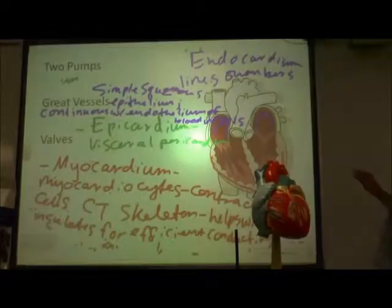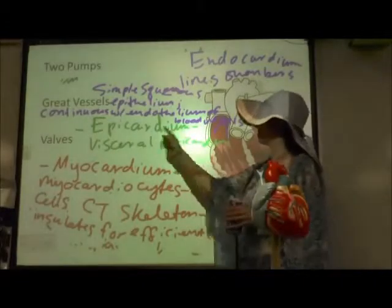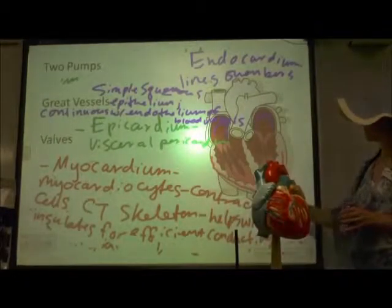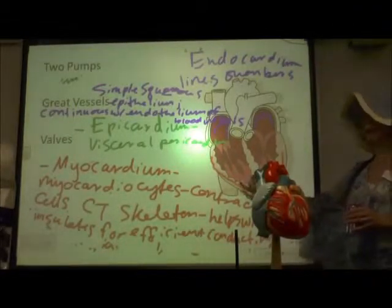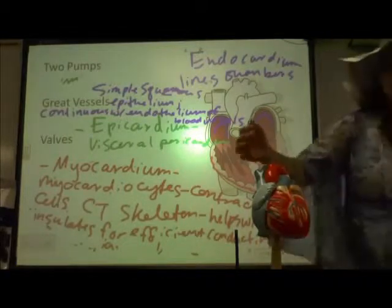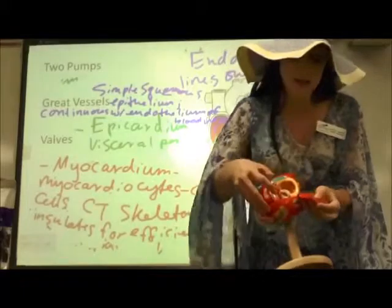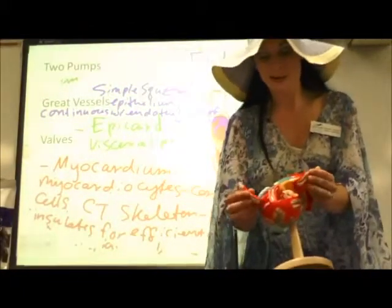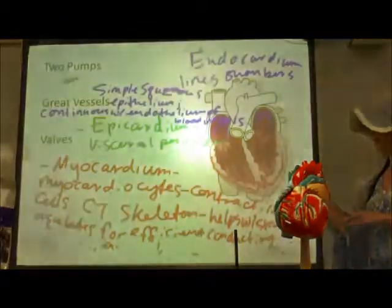To summarize the heart wall layers: the outermost is the epicardium, simple squamous epithelial tissue and the visceral pericardium; the middle is the myocardium, the thickest layer; and the innermost is the endocardium. The myocardium in the left ventricle is much thicker than on the right side — you'll see this clearly in your sheep heart dissection.